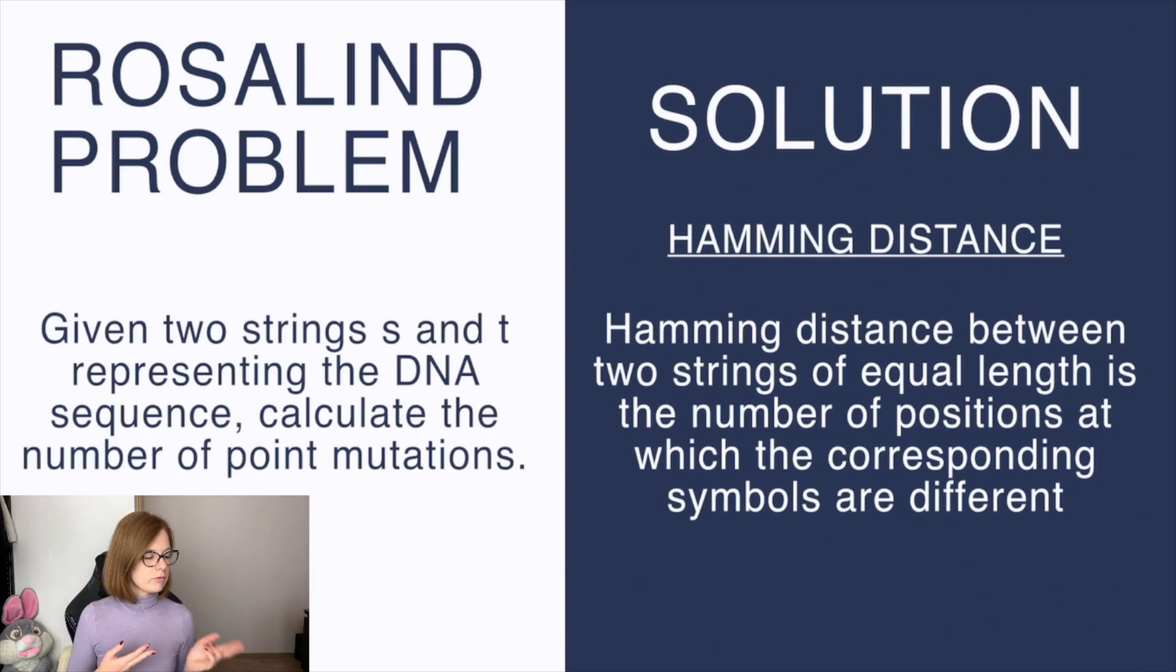And we can solve this problem by using a concept called Hamming distance. The definition is that the Hamming distance between two strings of equal length is the number of positions at which the corresponding symbols are different. And we're going to use Python to solve this problem so let's start coding.